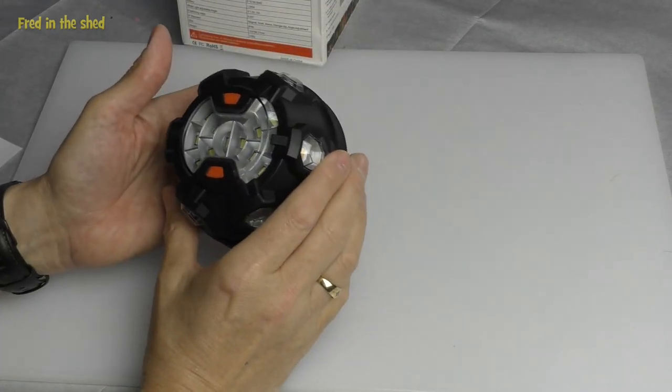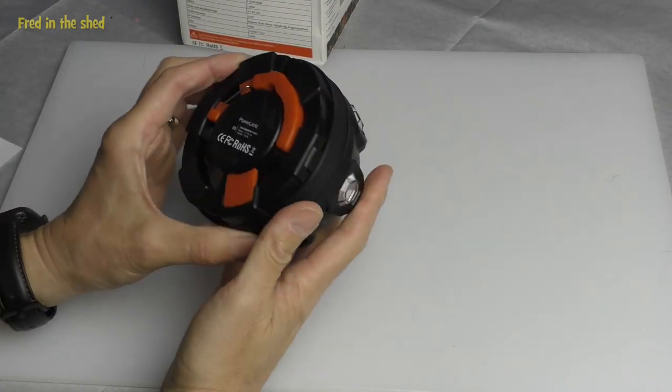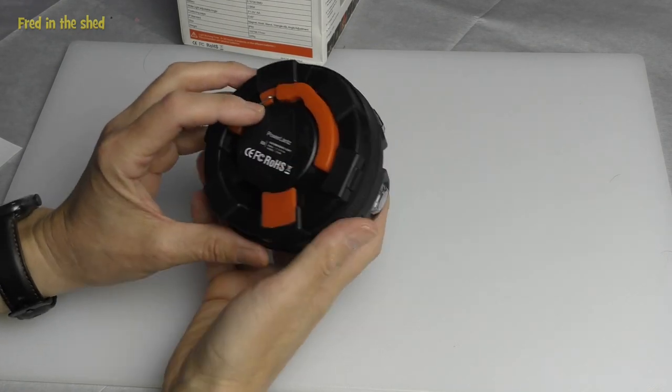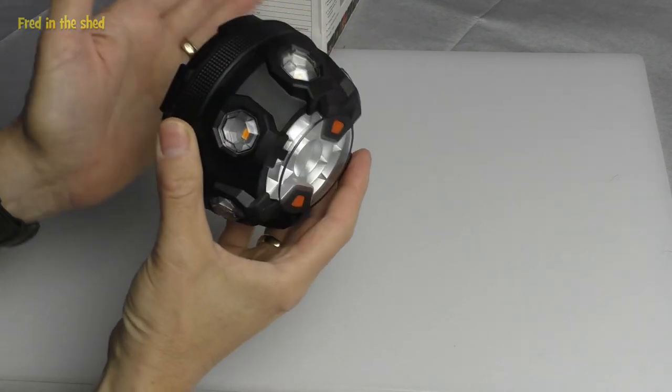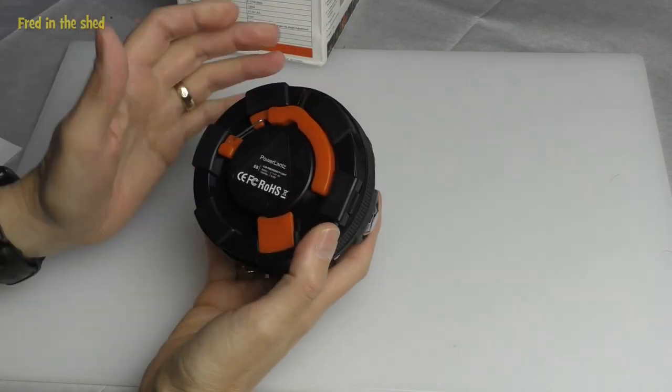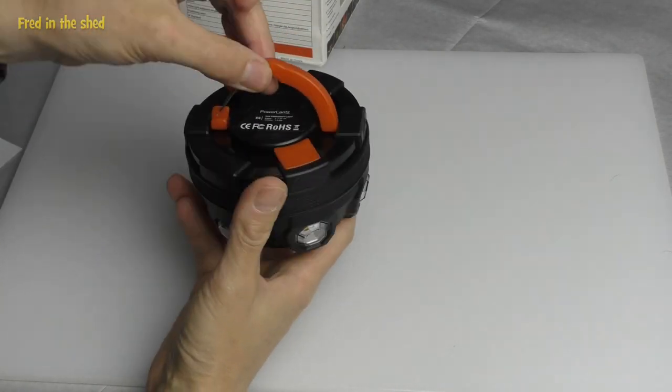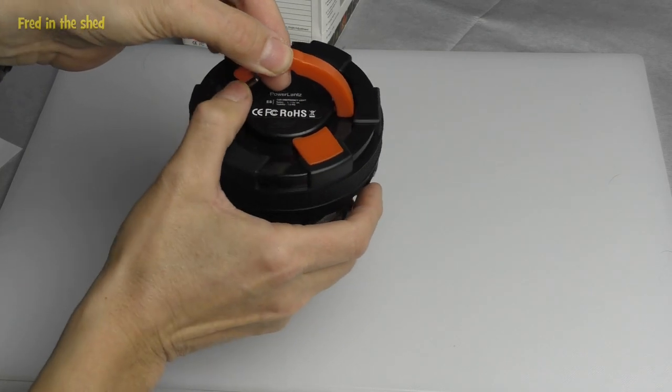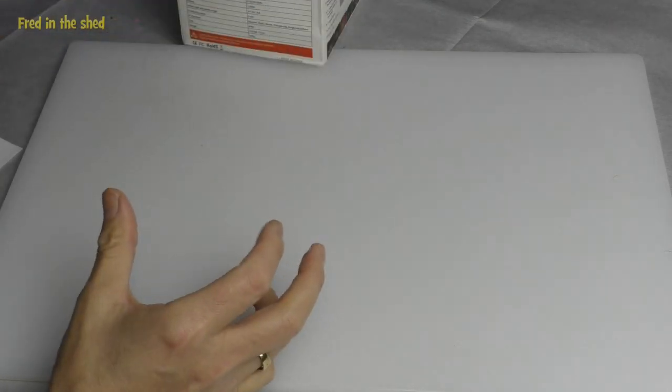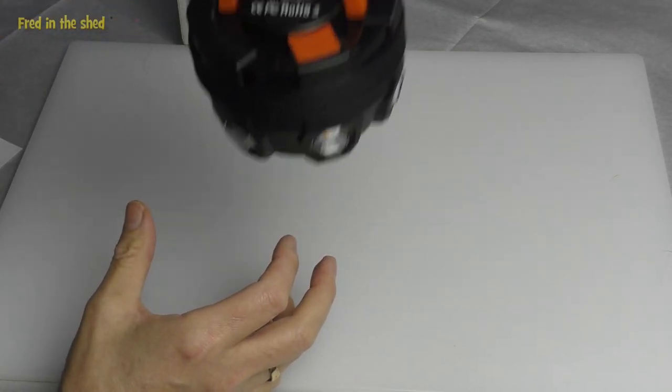Before I get around to switching it on, it's worth noting the mountings. Now this has two strong magnets in the base, enough to hold it onto the top, and possibly the side of your car. Also, it has a hook here that retracts with a little clip. So you may be able to hang it off something.